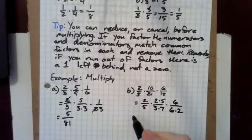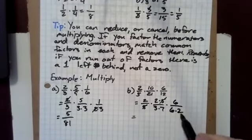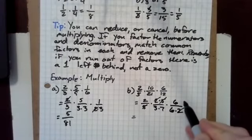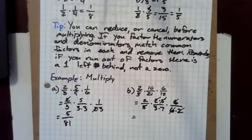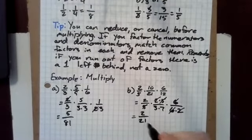So this allows me to cancel this five, those fives, this two, and this six. That leaves me with a two in the numerator and three times seven is 21 in the denominator.